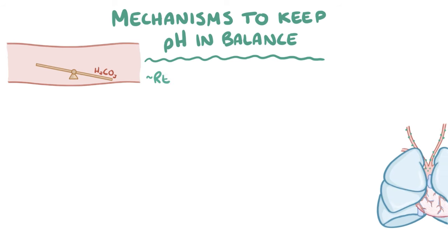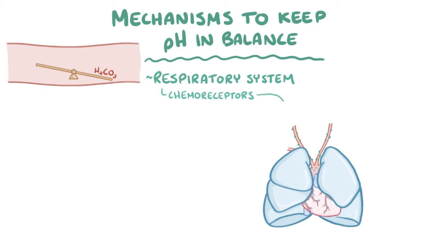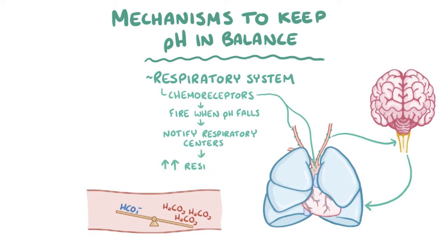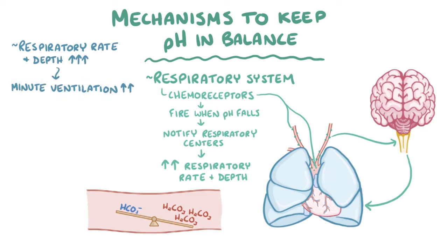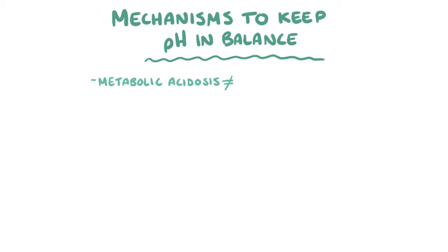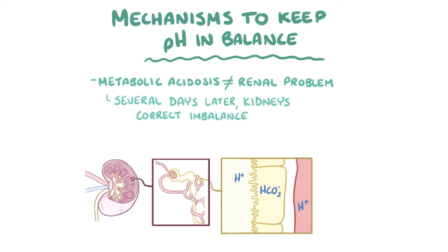Another important regulatory mechanism involves the respiratory system and starts with chemoreceptors located in the walls of the carotid arteries and in the wall of the aortic arch. These chemoreceptors start to fire when the pH falls, and that notifies the respiratory centers in the brainstem to increase the respiratory rate and depth of breathing. As the respiratory rate and depth of each breath increases, the minute ventilation increases — the volume of air that moves in and out of the lungs in a minute. The increased ventilation helps more carbon dioxide move out of the body, which reduces the partial pressure of carbon dioxide and increases the pH. Additionally, if metabolic acidosis isn't caused by a renal problem, then several days later the kidneys usually correct the imbalance by excreting more hydrogen ions while reabsorbing bicarbonate ions so that it's not lost in the urine.